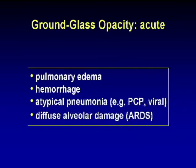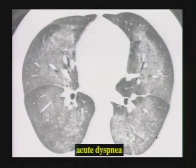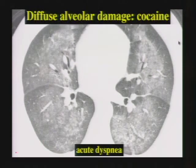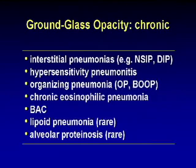I approach ground glass opacity the same way as consolidation — the key question is whether symptoms are acute or chronic. Ground glass with acute symptoms: pulmonary edema, pulmonary hemorrhage, atypical pneumonia such as pneumocystis or viral pneumonia, and diffuse alveolar damage. Ground glass with chronic symptoms has a longer differential including the interstitial pneumonias (NSIP and DIP), hypersensitivity pneumonitis, organizing pneumonia, chronic eosinophilic pneumonia, BAC, lipoid pneumonia (rare), and alveolar proteinosis (rare).